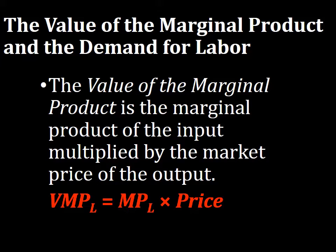The value of the marginal product (VMPL) tells us how much additional revenue that input creates. VMPL equals the marginal product of labor times the price of the product being produced. Quick note: the College Board does not use the term VMPL — instead they use MRP, which stands for marginal revenue product. VMPL and MRP mean the exact same thing.